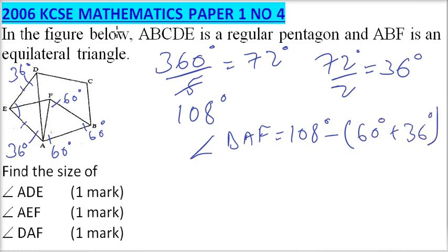So 60 plus 36, that will give us 96, that will give us 12 degrees. So this angle here is 12 degrees.